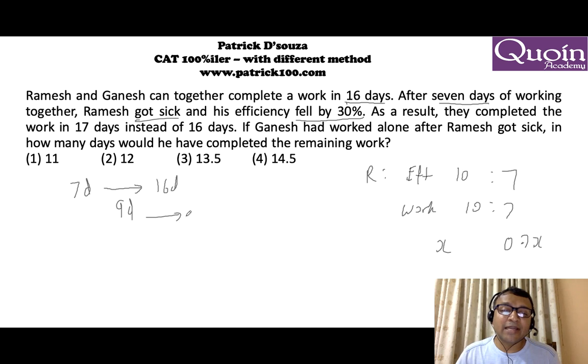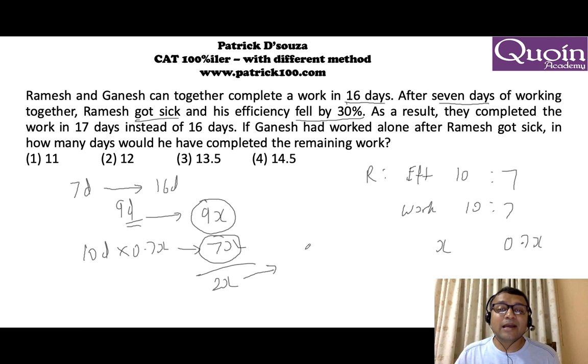He didn't work for the remaining 9 days which is 9x work. Instead of that, he worked till 17 days at 0.7x per day which gives you 7x work. So instead of doing 9x work in 9 days, he did 7x work in 10 days. The difference is 2x work which was done by Ganesh in 1 day. So that means Ganesh does 2x work in 1 day. That means together they complete 3x work in 1 day.